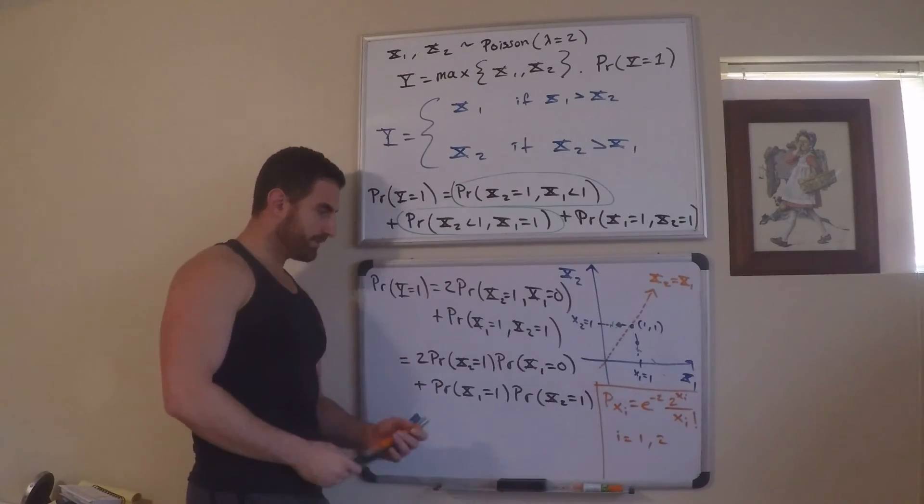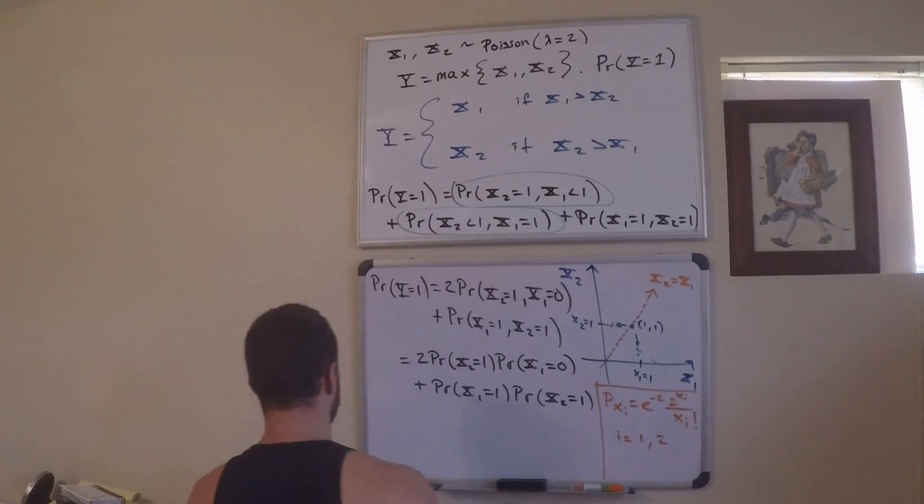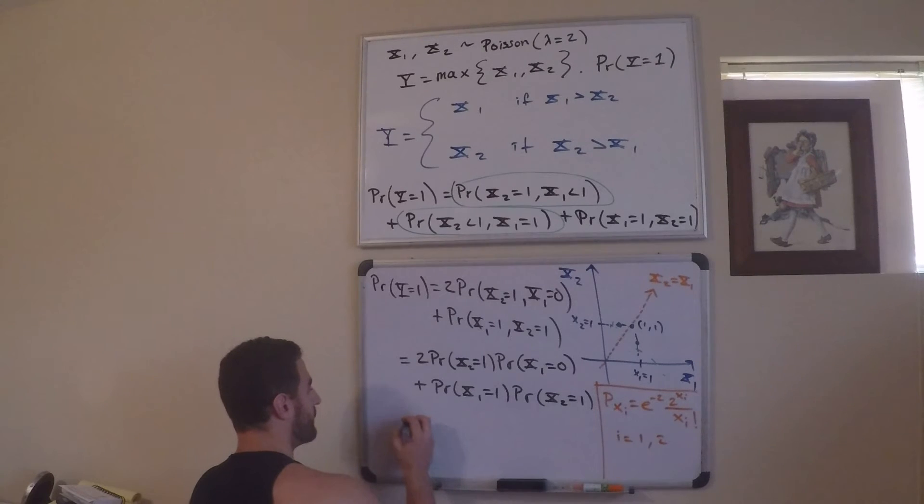Just plug stuff in and now we're done. So, this tells me that I get that this is equal to 2 times probability x1 is 1. Okay. So, plug in, think of this as being x1, replace x1 with 1. This is e to the negative 2 times 2. Probability x1 is 0. Sorry, this is x2 equals 1, x1 equals 0. Okay. Plug in 0. This is just times e to the negative 2.